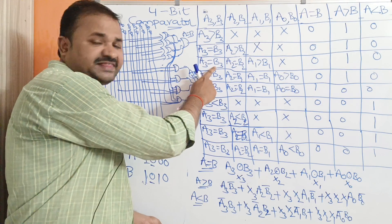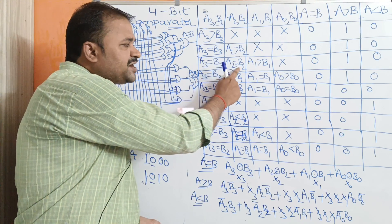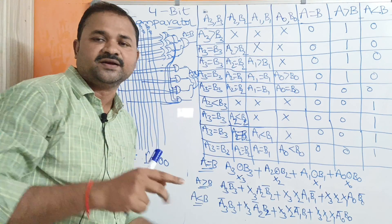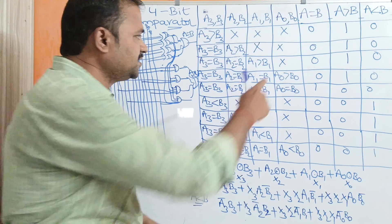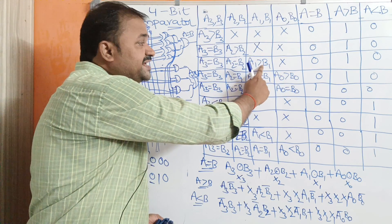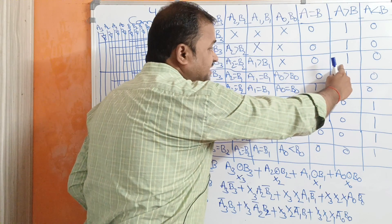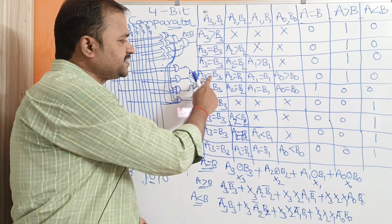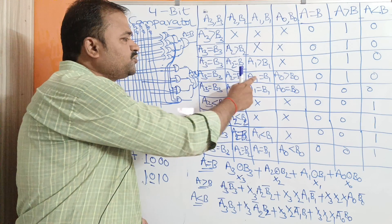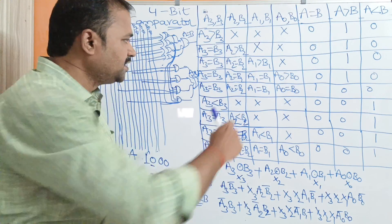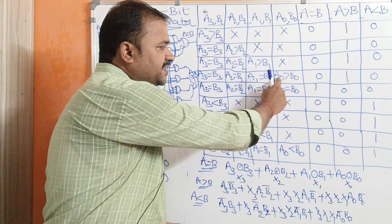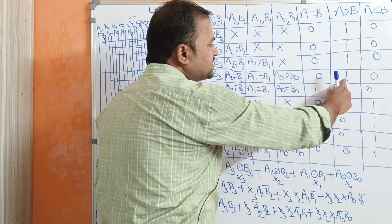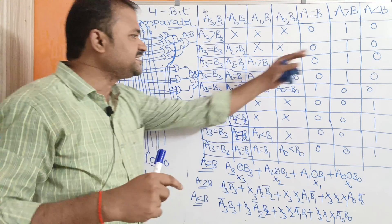For the next combination, if A3 equals B3 and A2 equals B2, then compare A1 with B1. If A1 is greater than B1, there is no need to compare A0 with B0, so that is don't care. The A greater than B output is 1 and the remaining two outputs are 0. Finally, if A3 equals B3, A2 equals B2, and A1 equals B1, then compare A0 with B0. If A0 is greater than B0, then A greater than B output is 1 and remaining outputs are 0. With this, the greater than cases are complete.